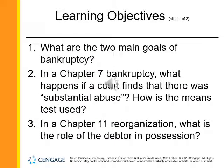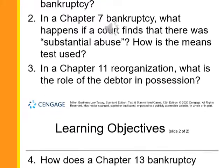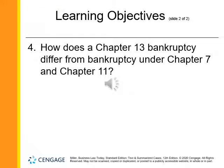Learning objectives. What are the two main goals of bankruptcy? In a Chapter 7 bankruptcy, what happens if a court finds there was substantial abuse? How is the means test used? In a Chapter 11 reorganization, what is the role of the debtor in possession? How does a Chapter 13 bankruptcy differ from bankruptcy under Chapter 7 and Chapter 11?